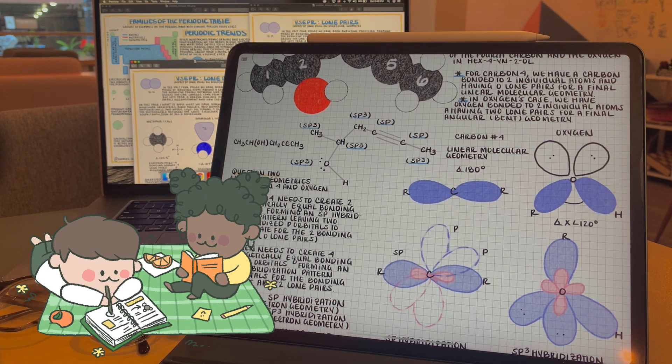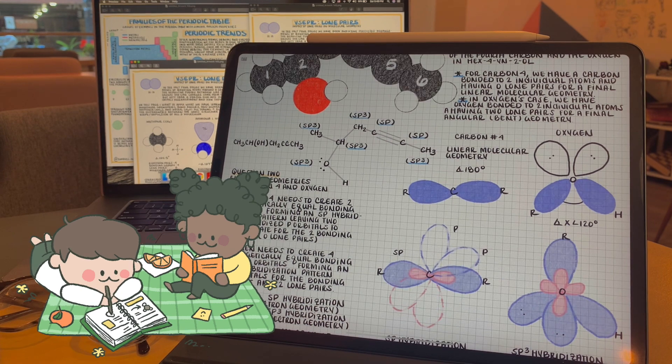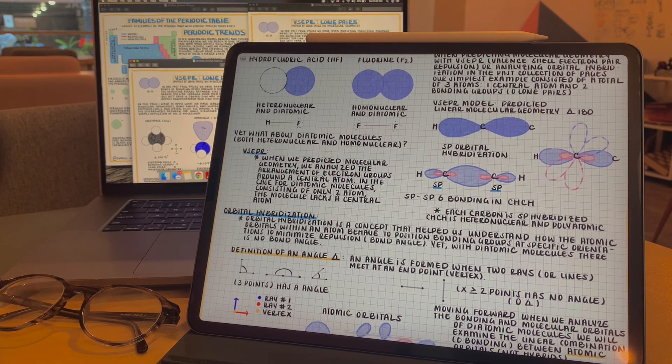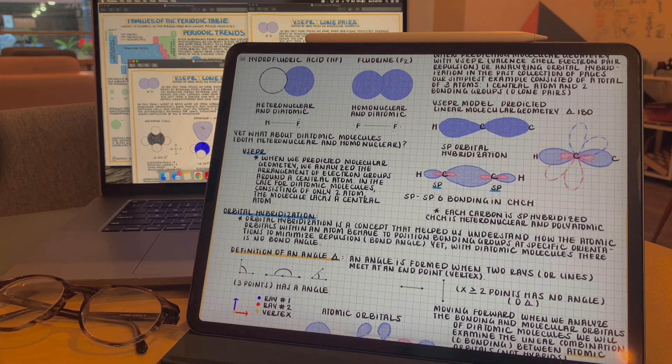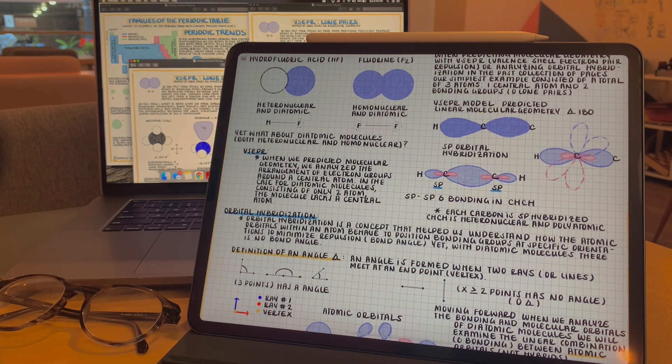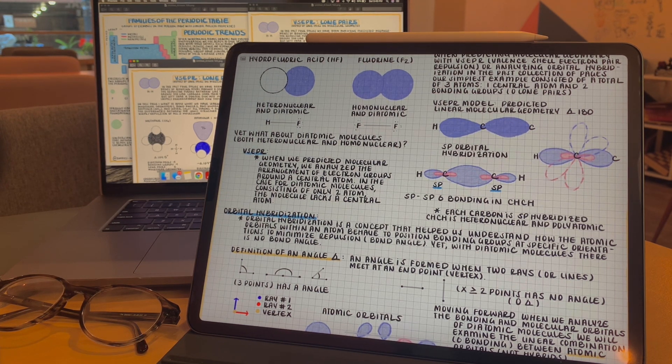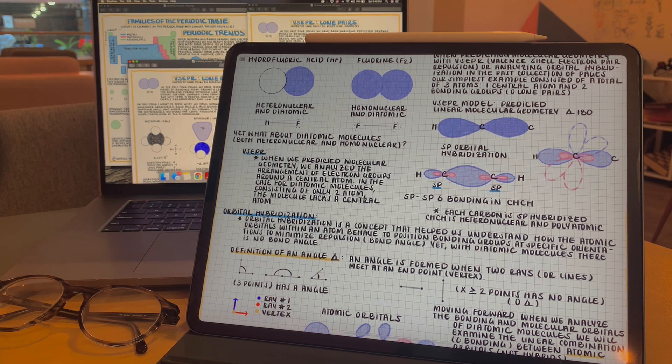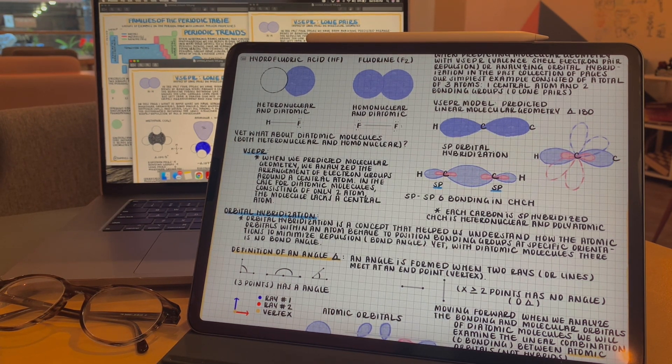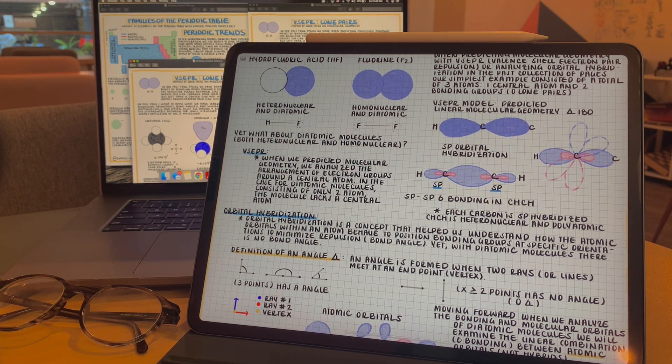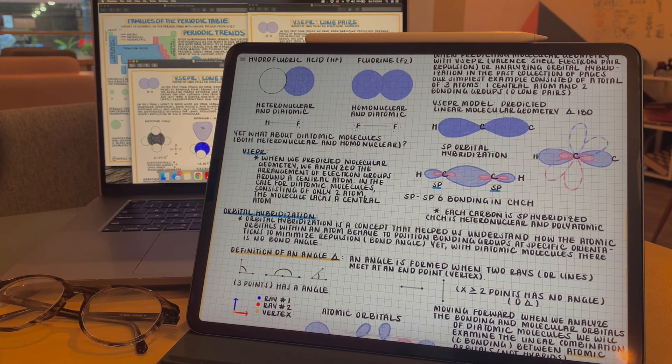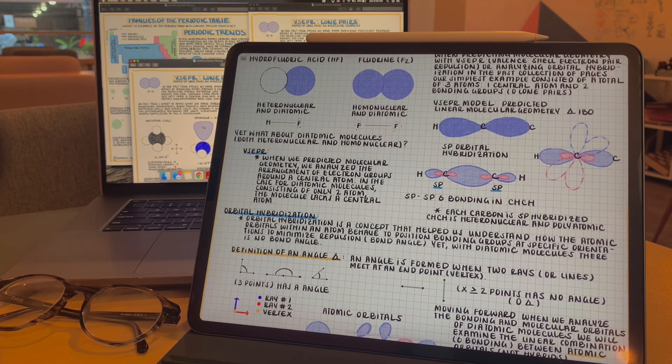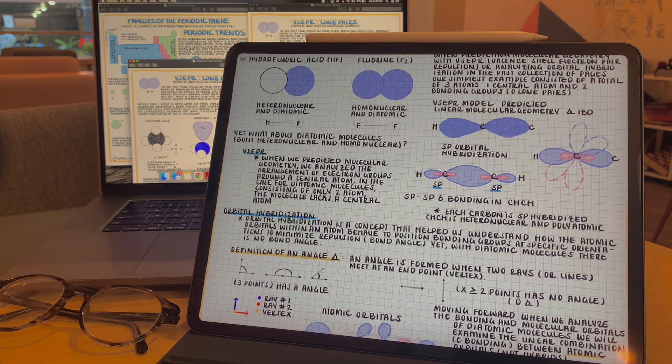But before we wrap up, I just want to add one little detail that isn't talked about a lot. Why haven't we mentioned the molecular geometry of, or electron geometry, of molecules consisting of only two atoms, so diatomic? This is why. With an atom consisting of only two atoms, there is no central atom for us to analyze the geometry around. There's no internal atom. Second, orbital hybridization is actually a mathematical concept that helps us understand how atomic orbitals hybridize to accommodate electron groups at certain angles. Since two points cannot create an angle, in the case for a diatomic molecule, those groups will not hybridize.